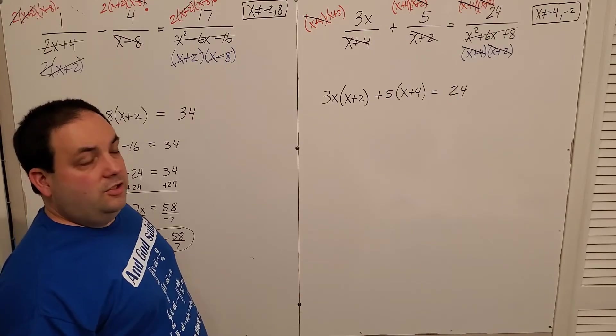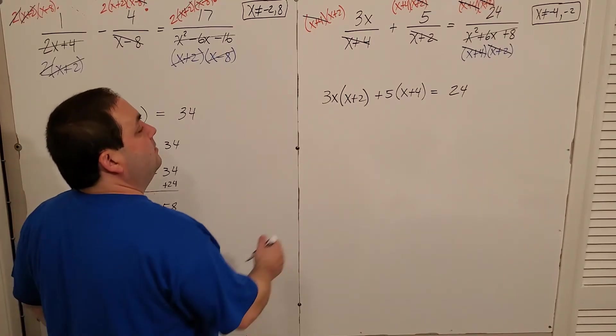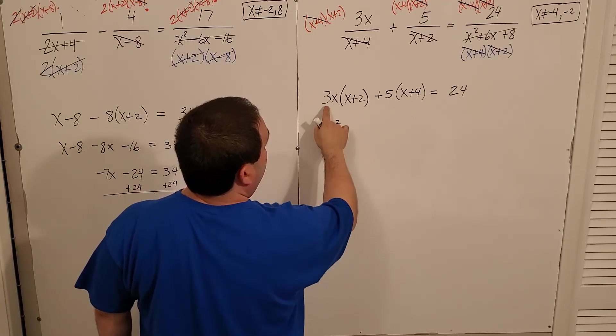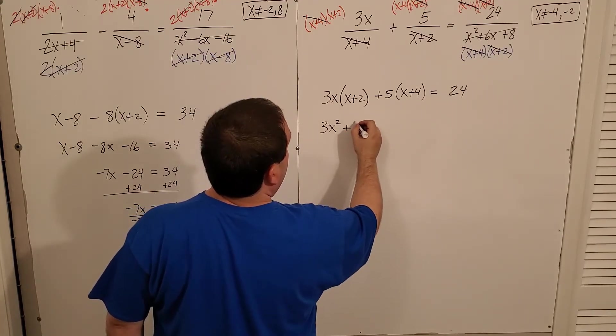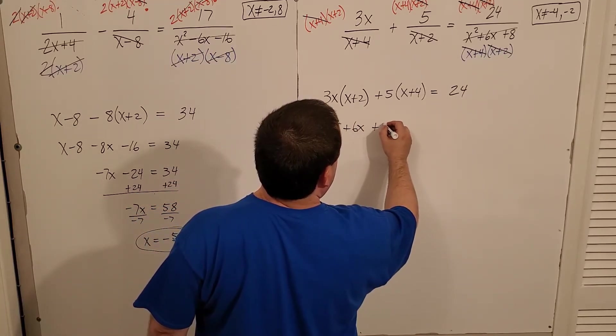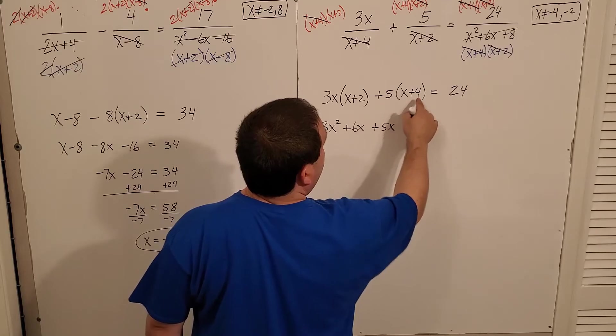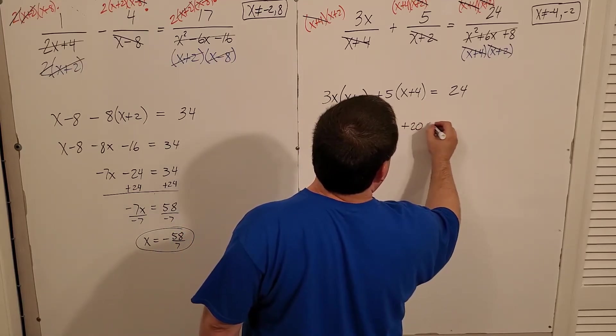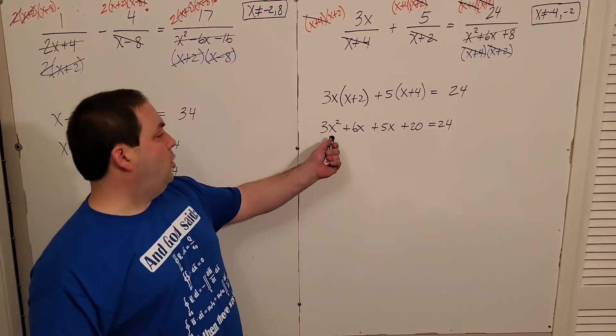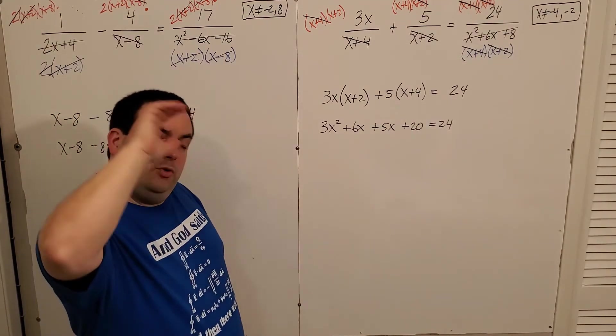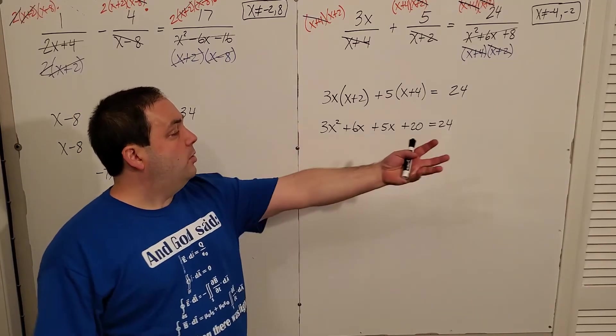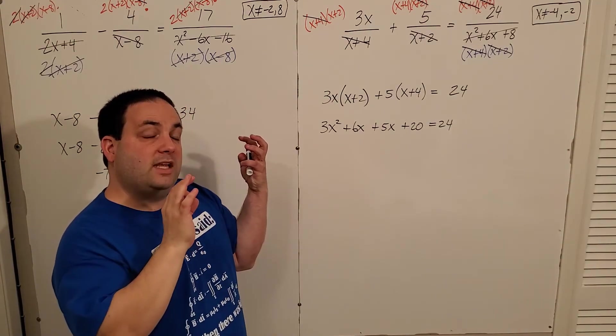All right. So let's distribute, get rid of our parentheses. 3x times x is 3x squared. 3x times 2, 6x. 5 times x, 5x. 5 times 4 is 20. And I'm noticing that it's a quadratic. Remember, as soon as you notice, oh wait, it's quadratic. It's not linear anymore. So everything needs to come to one side because I need that equal zero. Either one of the methods that you're going to use, no matter what method we approach, remember we want the equal zero for quadratics.